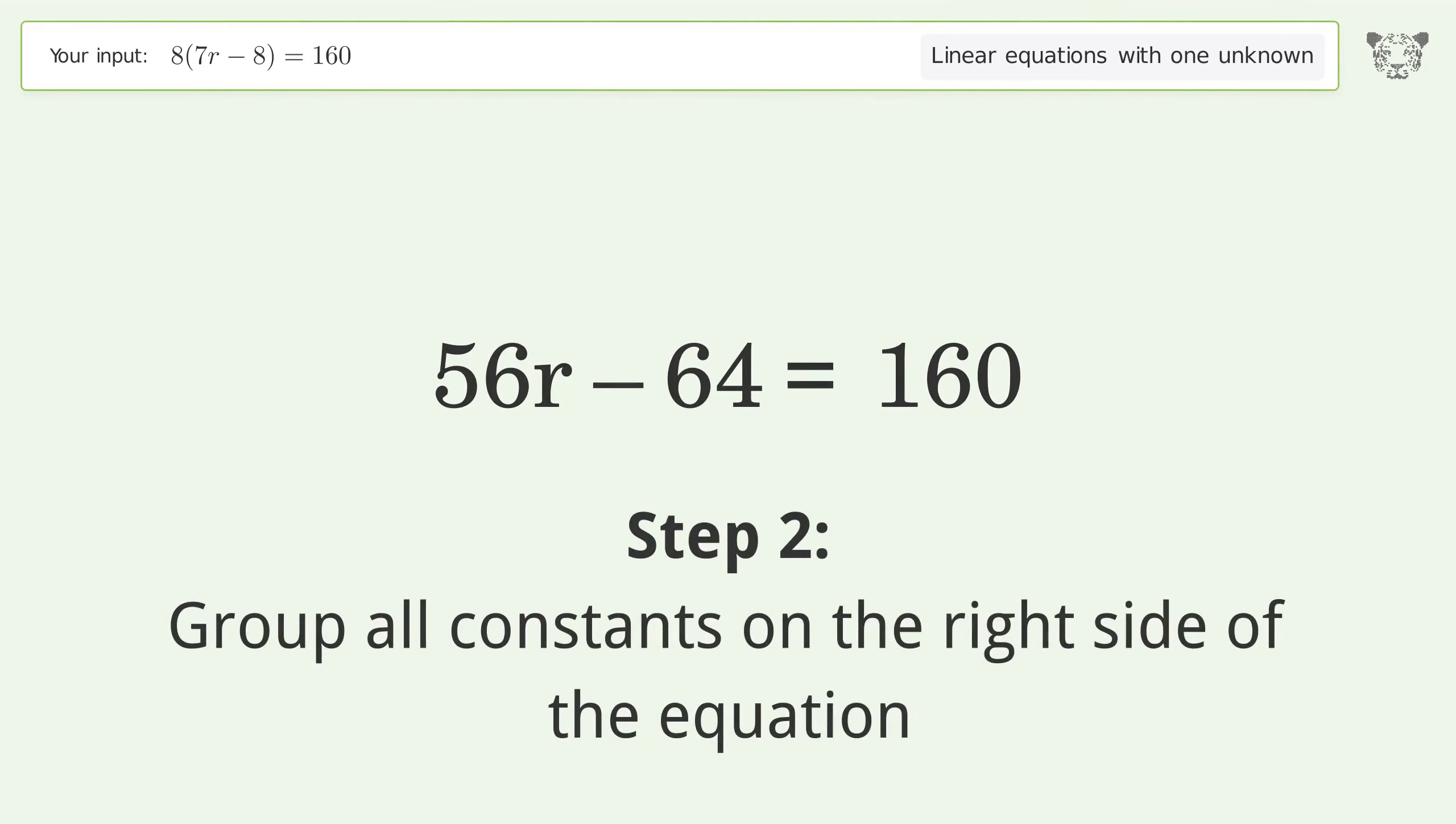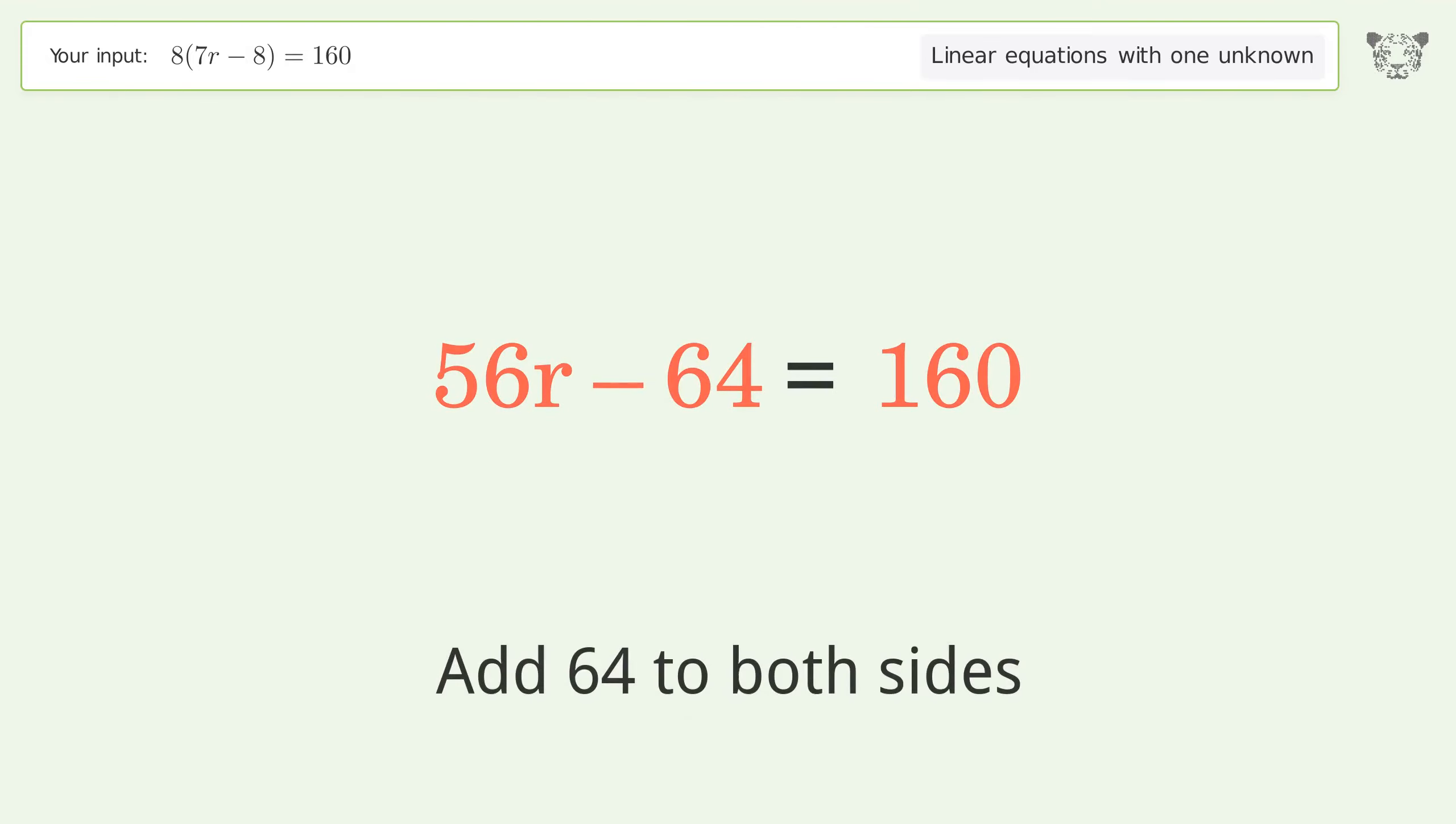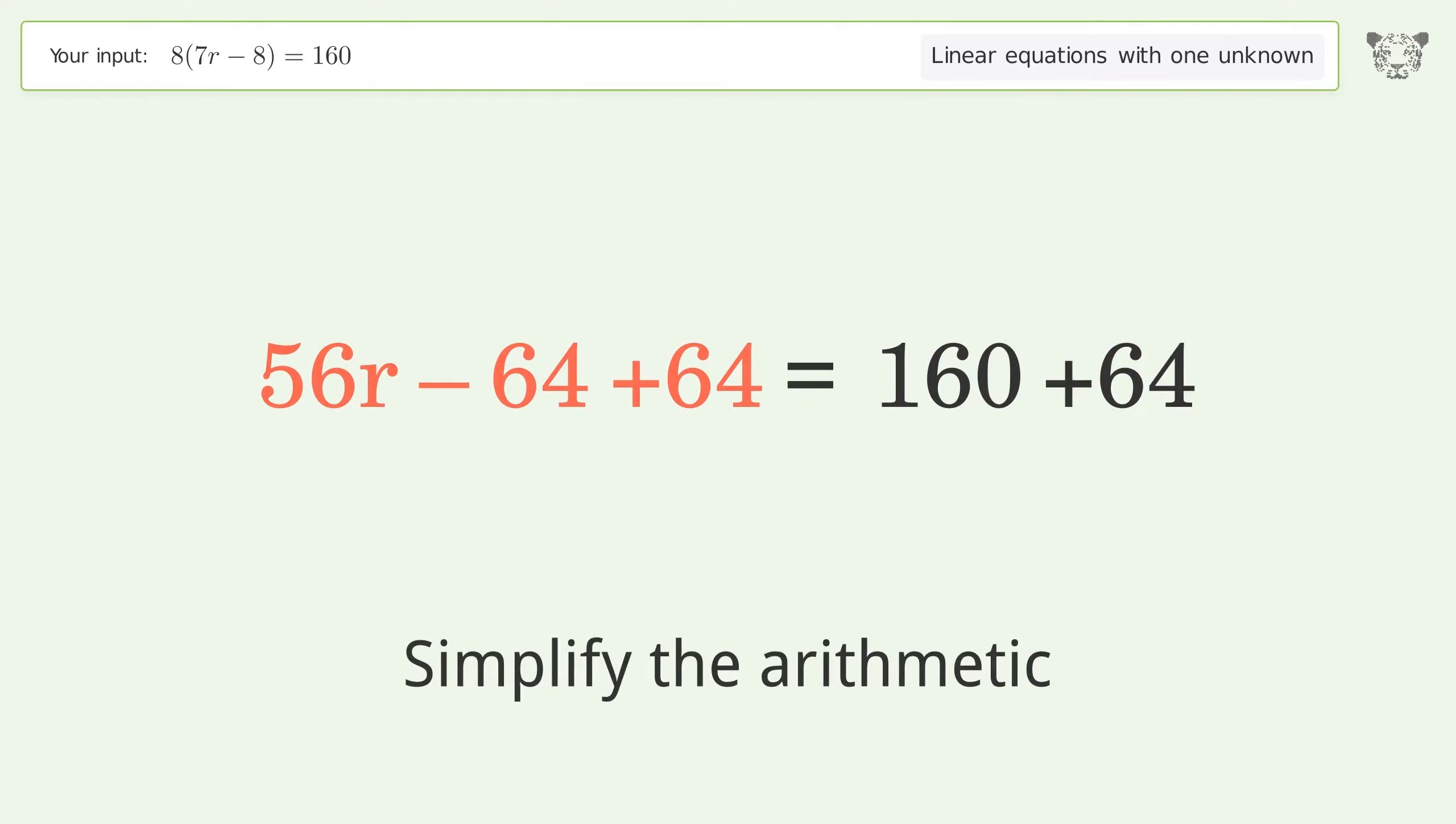Group all constants on the right side of the equation. Add 64 to both sides. Simplify the arithmetic.